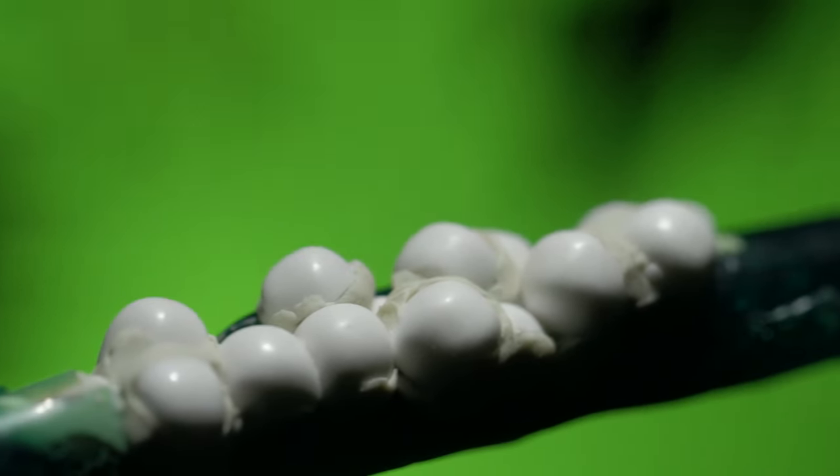A treehopper egg nestled with its siblings in the bark of a caliandrini tree begins its insect life.